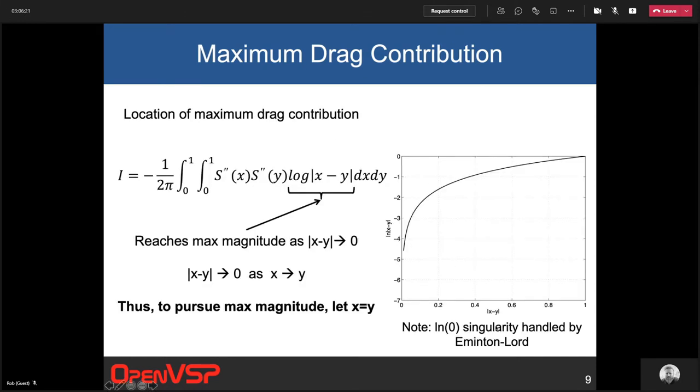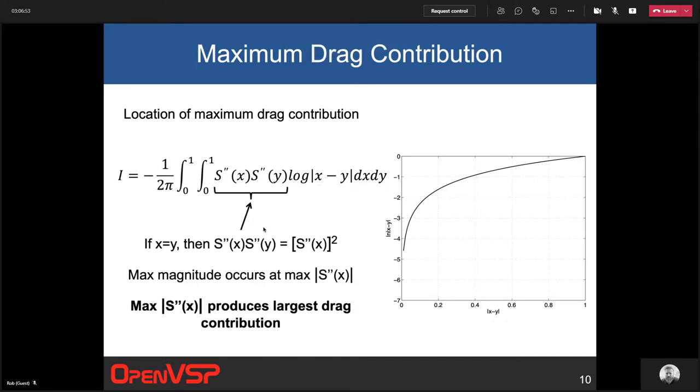But the idea here, returning to this integral is if we look at the integrand and we first, we look at this log term, we see that this is going to reach a maximum as X is equal to Y. So that if we could drive the absolute value of X minus Y to zero, then X is equal to Y. And that's going to drive this integrand to a maximum. So we've got this double integral along the body. So when we're looking at the same station, X and Y are together, that's going to maximize that integral. And likewise, if X is equal to Y, then we can look at this product where the second derivative of S, if X is equal Y, then what we're looking at here is S prime prime squared. And so clearly the maximum magnitude of this contribution to the integral occurs at the maximum absolute value of S prime prime. And so wherever the maximum magnitude of S prime prime is, so the maximum magnitude of the second derivative of the area distribution is going to be the thing that contributes the most to the drag.